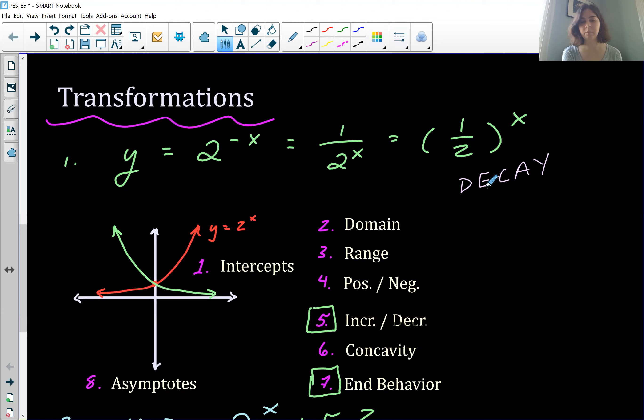And the way that I set this up was, I kept the exact same qualities, but I boxed in the ones that change when we do that transformation. So going through this really quickly, the intercept is going to be the same, again, because you plug in zero, anything to the power of zero is going to be one. So intercept is the same.